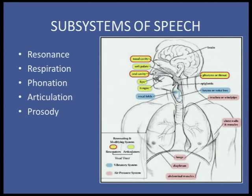Next we look at articulation — all of the oral motor muscles, their strength, coordination, and range of movement. And lastly, prosody: your rate, rhythm, stress, intonation — what makes my speech sound like mine and someone from the UK sound like theirs. We really want to make sure the family and the patient understand it is a dynamic process from abdominal and diaphragmatic breathing up through the trachea and through the oral cavity.